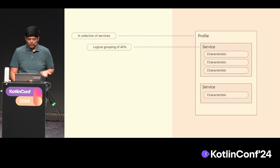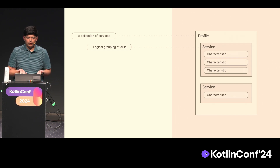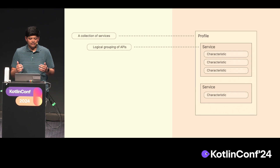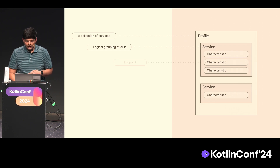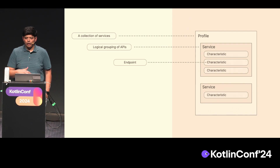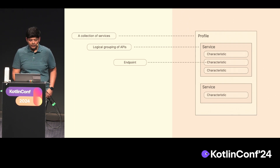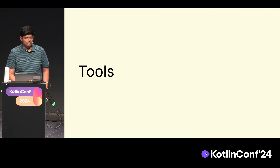You have these things called profiles — think of them as a RESTful resource if you're a web developer or work on a back end. A characteristic is essentially an endpoint that you can read from, write to, or get notifications from. That's how you should think about it. And now you know everything there is to know about Bluetooth, logically speaking.